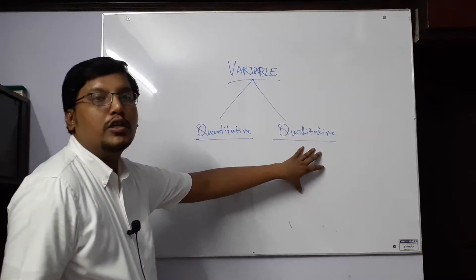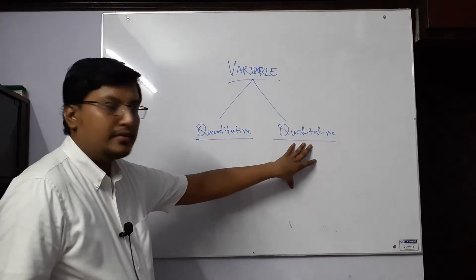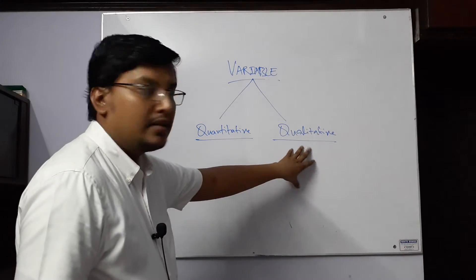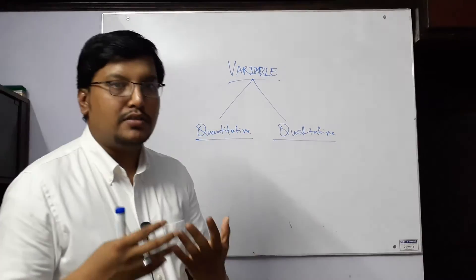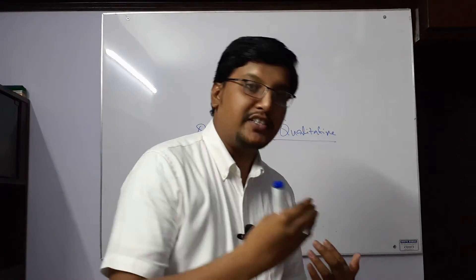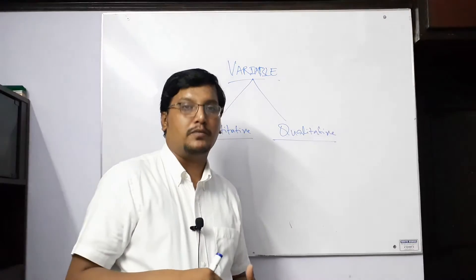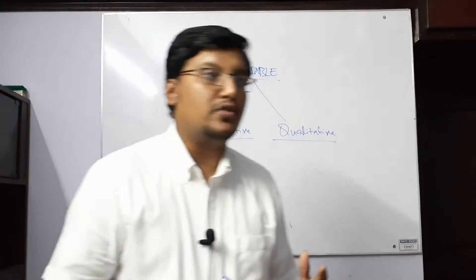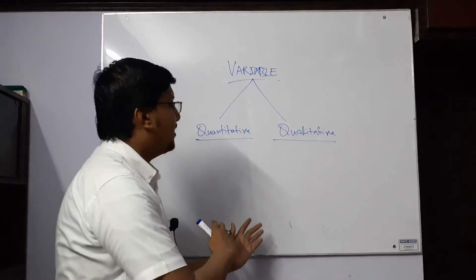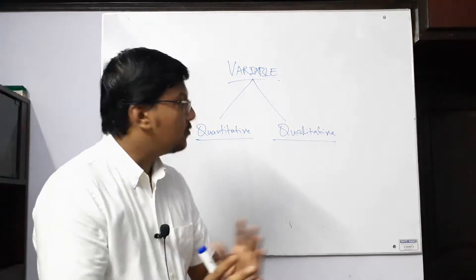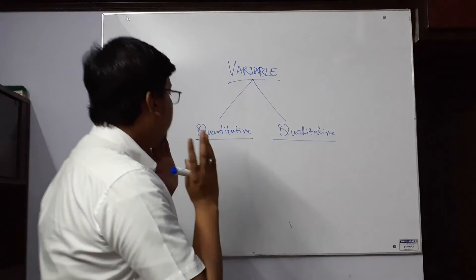If we are talking about an individual and discussing what is the color of the eye, eye color is the quality of an individual. If we are talking about education status — masters, metric, intermediate — these are the qualities of an individual. If we are talking about the color of a chair — red, green, brown — these are colors, and these are qualities. So these variables are called the qualitative variables.